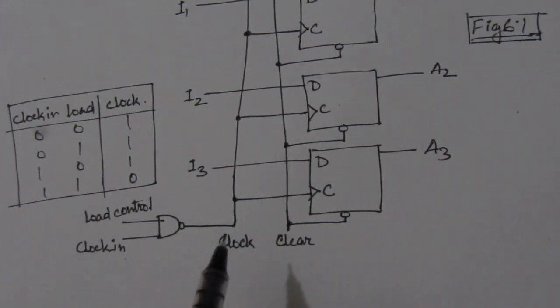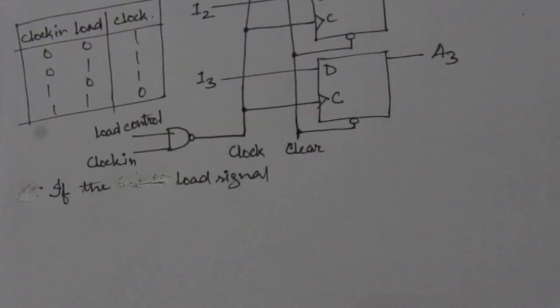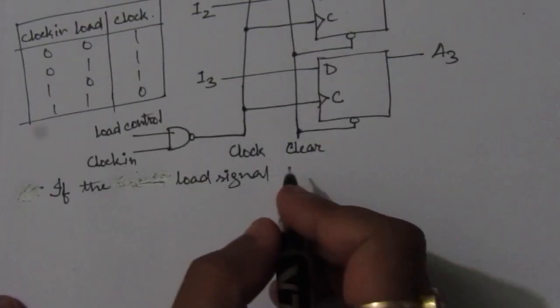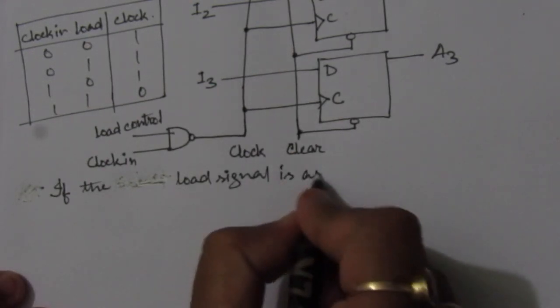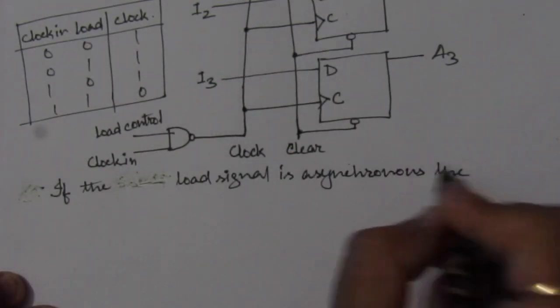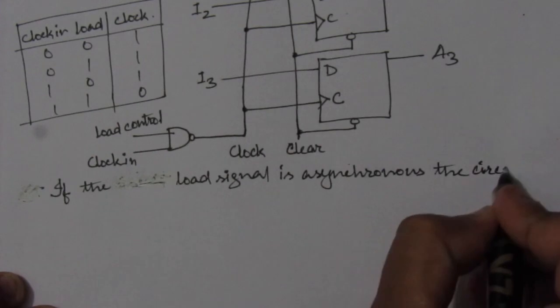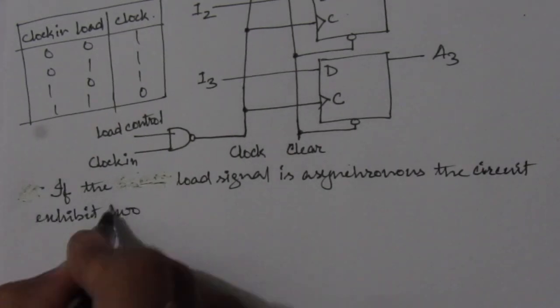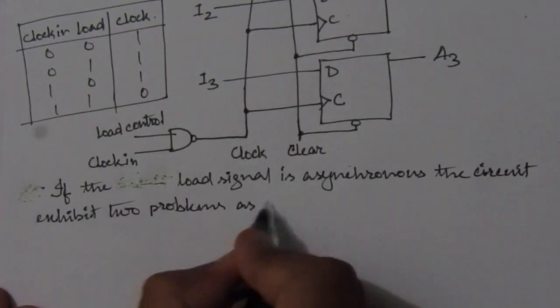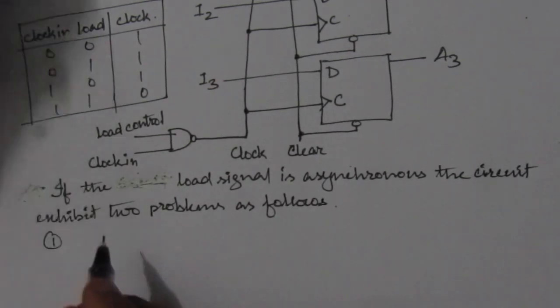So here we will have 2 operational complexities. So here we will write, if the load signal is asynchronous, the circuit exhibits 2 problems as follows. So the first problem is,